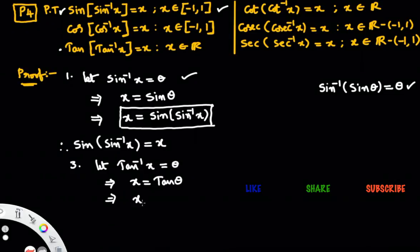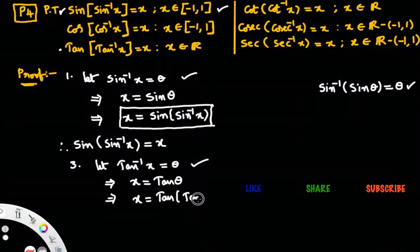From this, x equals tan of — what is theta? You observe the first step: theta is tan inverse x. So in place of theta, you write tan inverse x. Now observe: x equals tan of tan inverse x. The same result we wanted to prove: tan of tan inverse x equals to x.